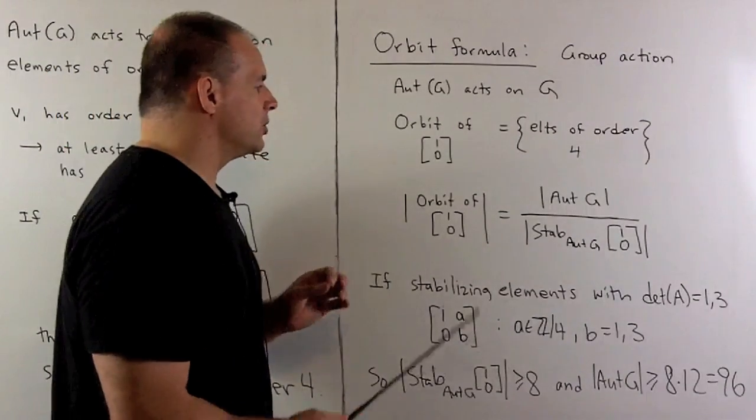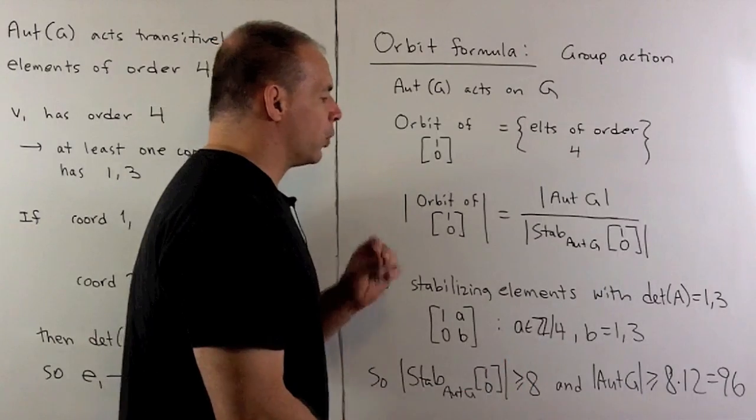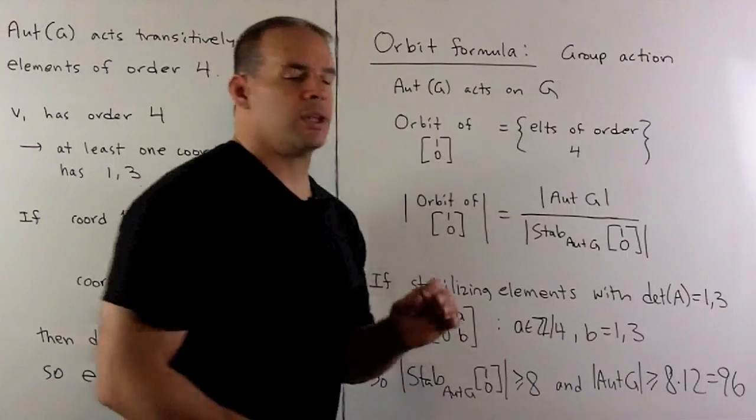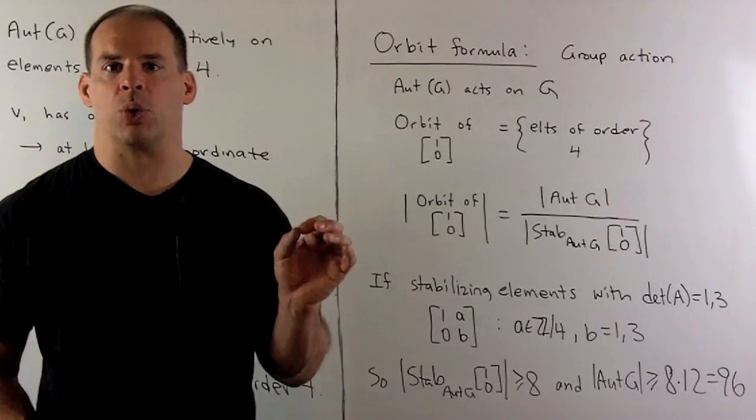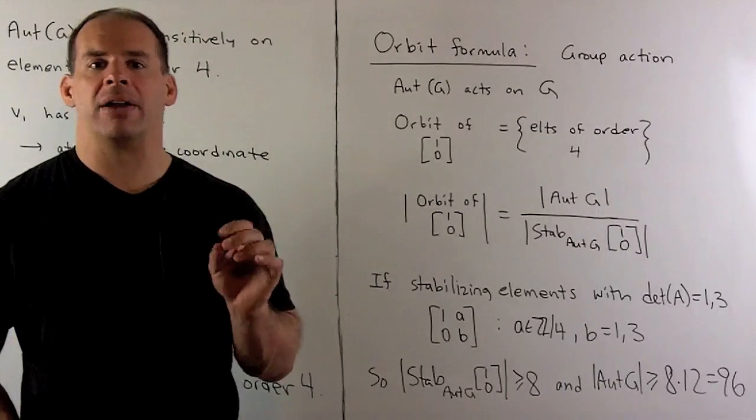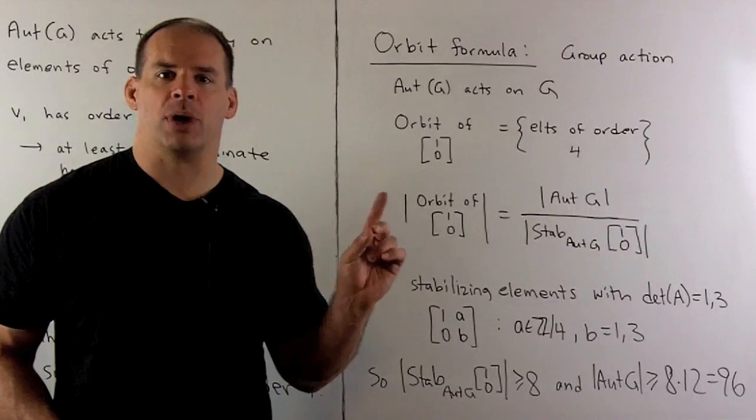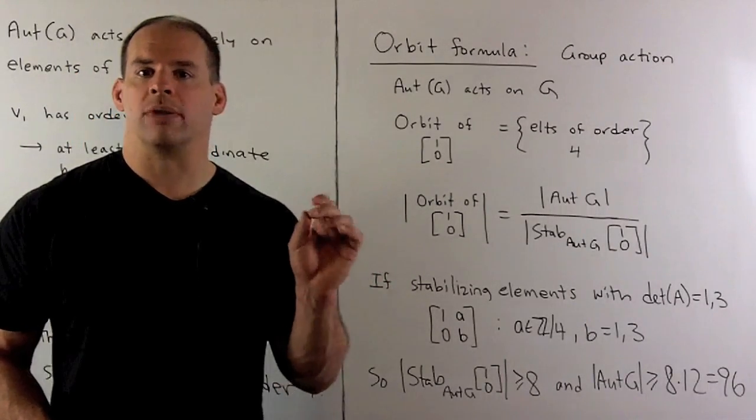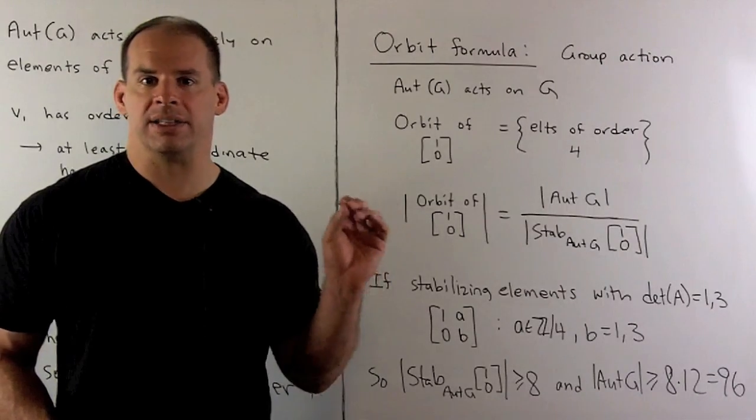Now, that means, using our formula, that the order of the automorphism group is going to be greater than or equal to 8 times 12 or 96. So, we have a lower bound of 96, but that's also an upper bound. So, the order of our automorphism group is 96.